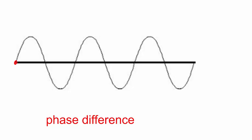For example, the phase difference between this point here and this point here would be 180 degrees. Similarly, the phase difference between this point here and this point here would also be 180 degrees.